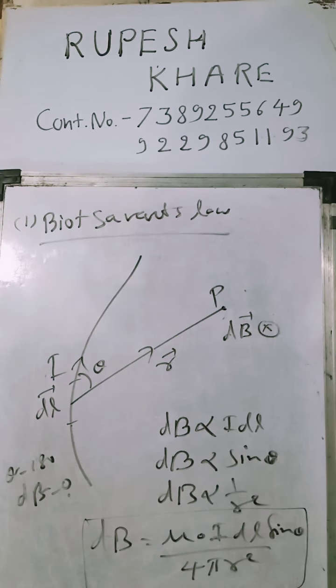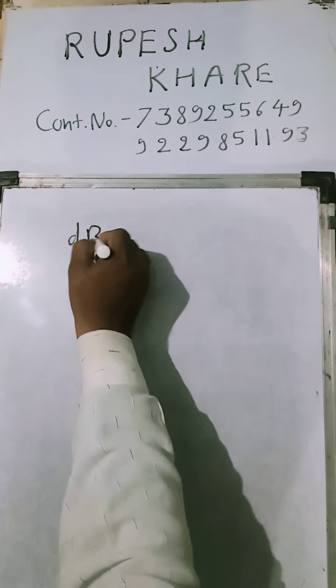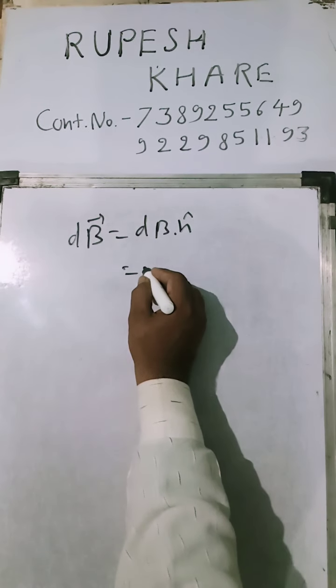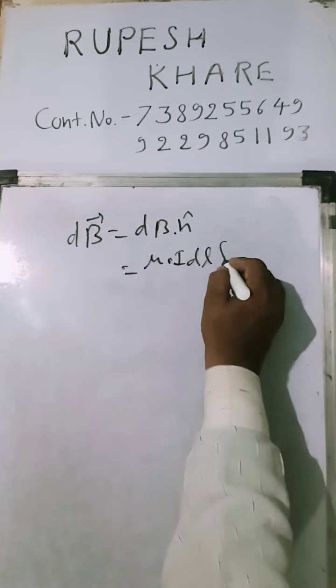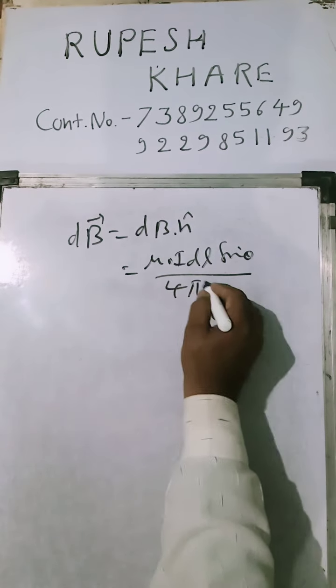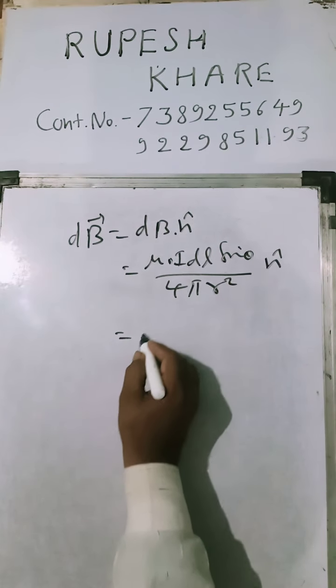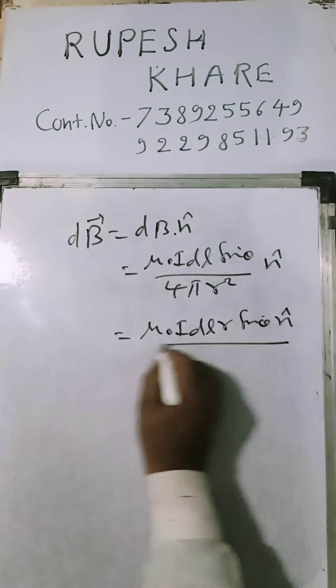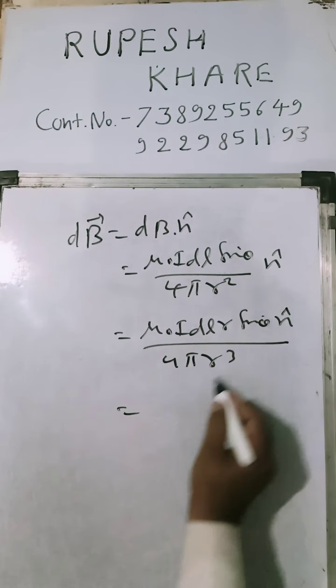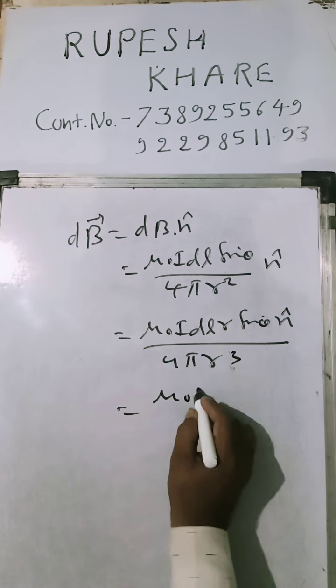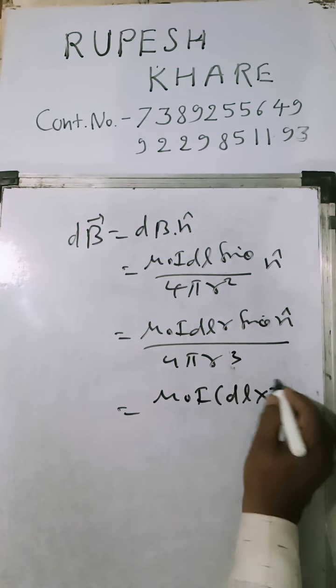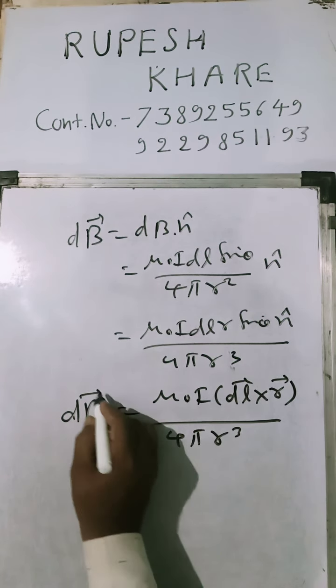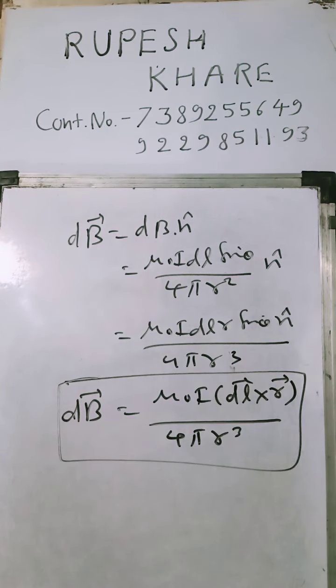For the vector form, db into n-cap equals mu_0 i dl sin theta upon 4 pi r square n-cap. We can also write it as mu_0 i dl cross r upon 4 pi r cube. If we divide by r, dl cross r comes, meaning the vector form is complete. This is the vector form.